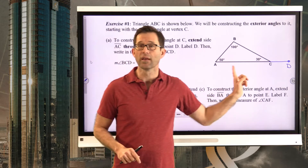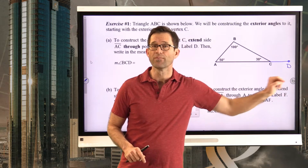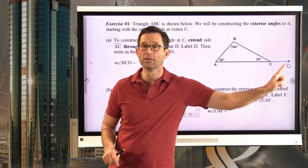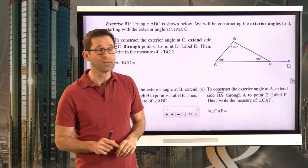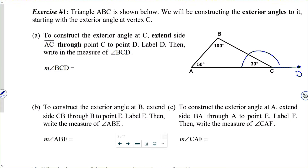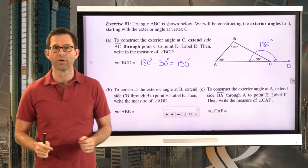All I need is this line segment extended out. Now I want to know the measure of angle BCD. That's actually pretty easy because I know that this entire angle must sum to 180 degrees, and therefore BCD must be 180 degrees minus that 30 degree angle. So BCD must have a measure of 150 degrees.